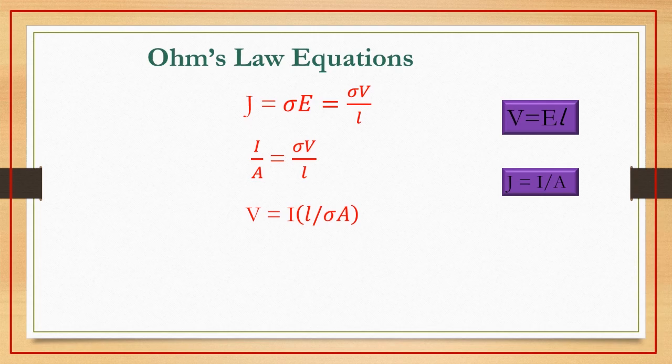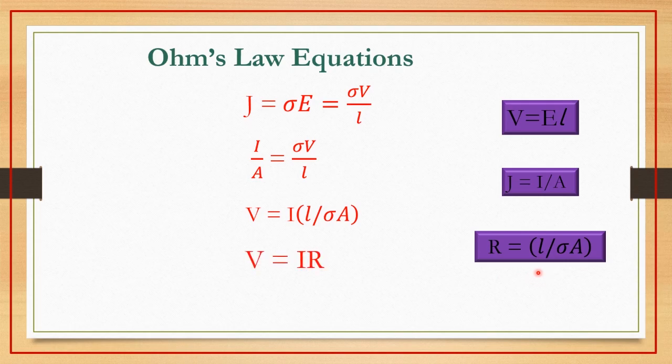We can rearrange and write it as V equals I into L divided by sigma A. This quantity L by sigma A could be named as R resistance. So V equals IR.